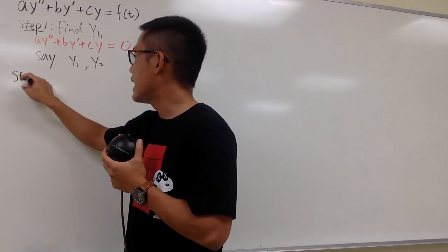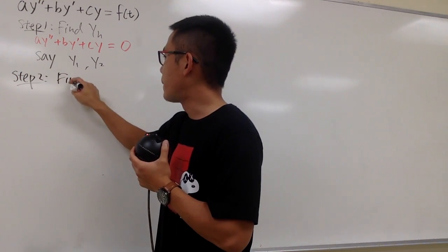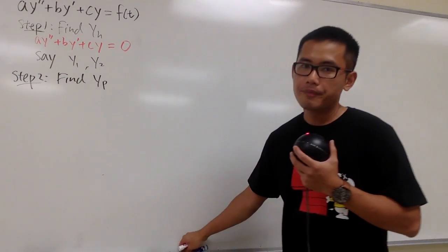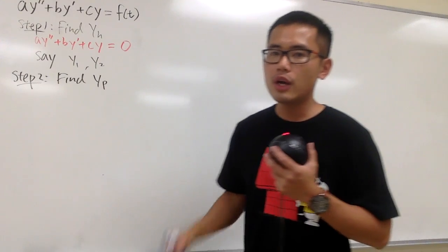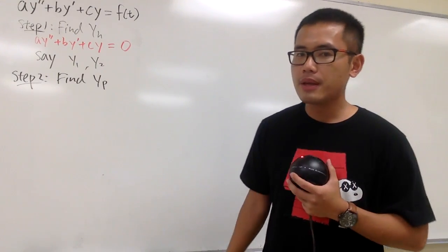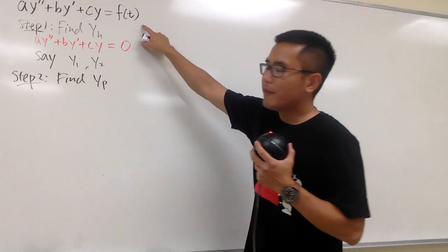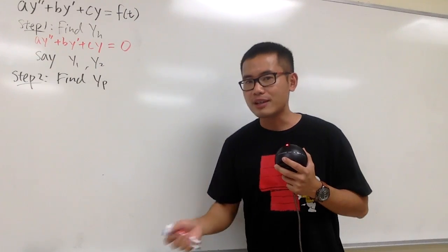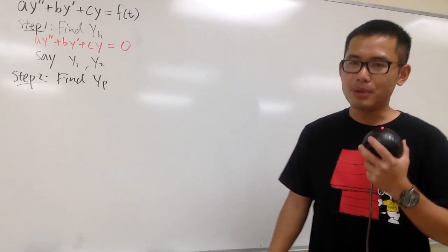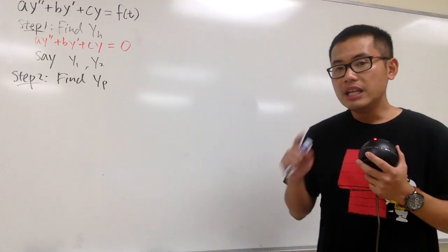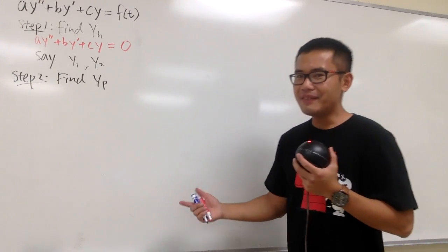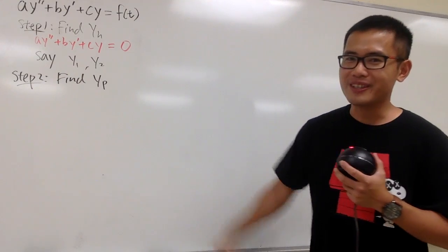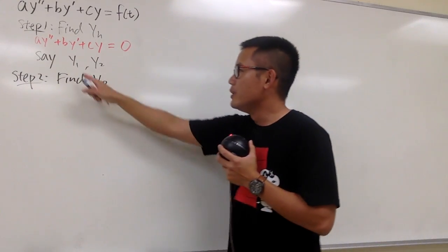Step two, we have to find the particular solution, yp. We could have done this with undetermined coefficients if f(t) is sine, cosine, exponential, or polynomial. But with the variational parameter method, you can also deal with f(t) being tangent and other functions — so it's really flexible.